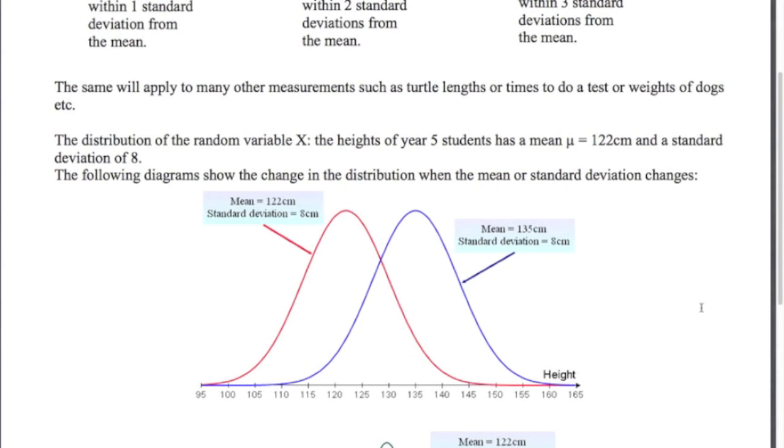Let's just have a look at a few diagrams here that show how the shape of the normal distribution changes when we change the mean. So in this case here we've got a mean of 122. You can see it's centered at 122, standard deviation of 8. This normal distribution in blue has a mean of 135. You can see it's just shifted across, same standard deviation.